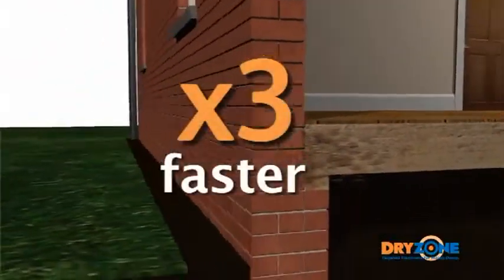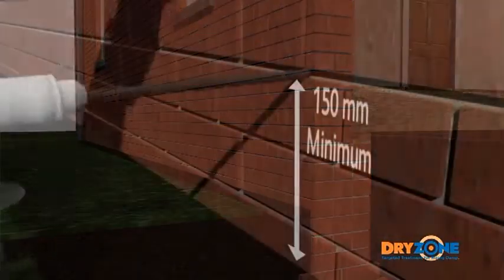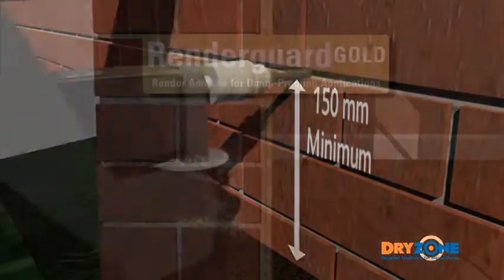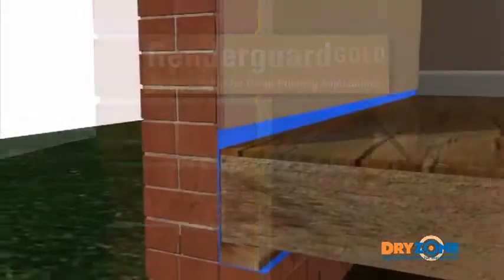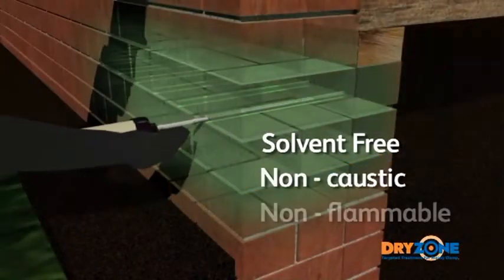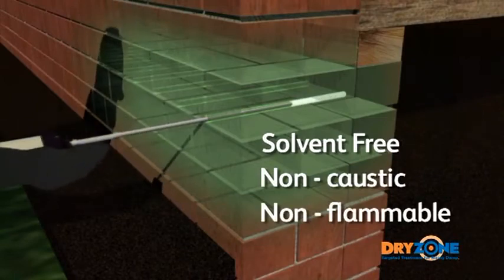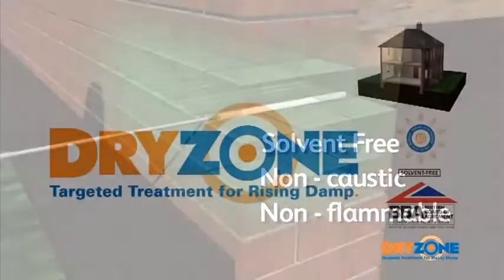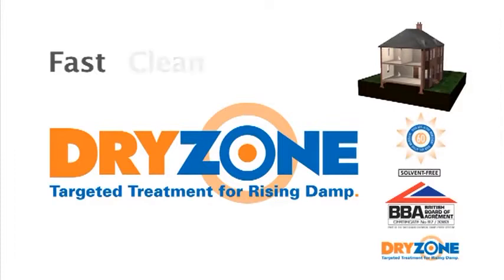Dryzone is three times faster to install than traditional chemical injection systems, minimising inconvenience and disruption to the householder. Because it is solvent-free, non-caustic and non-flammable, it is also safer to use. Dryzone, the fast, clean and effective treatment for rising damp.